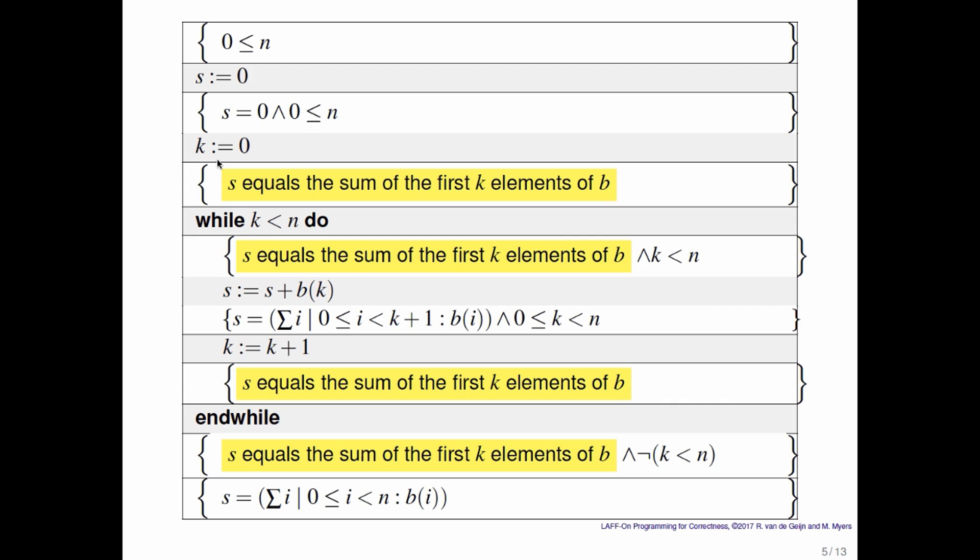So what can we conclude from that? We can conclude that every time through the loop s equals the sum of the first k elements of b at the top and at the bottom of this loop.